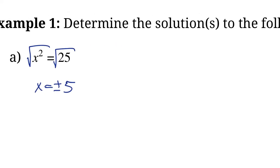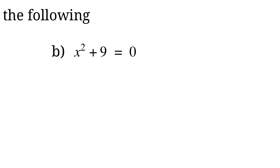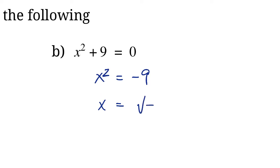Now let's check out this problem and try to solve it in the same way. First of all, we need to move that 9 to the other side, so x squared equals negative 9. Now to solve this, we need to again take the square root of both sides to try to isolate x. So x equals the square root of negative 9.